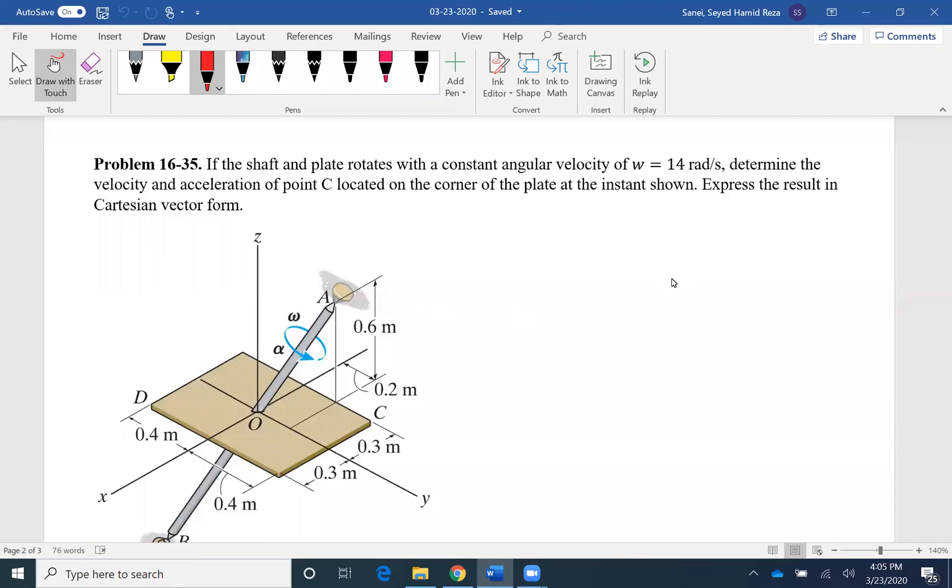The second problem we're going to solve is problem 35 of chapter 16. If the shaft and plate rotate with a constant angular velocity of omega equals 14 radians per second, so constant angular velocity, that's the key word for us. If omega is 14 radians per second and if it is constant, which means that alpha is zero, determine the velocity and acceleration of point C located on the corner of the plate at the instant shown.